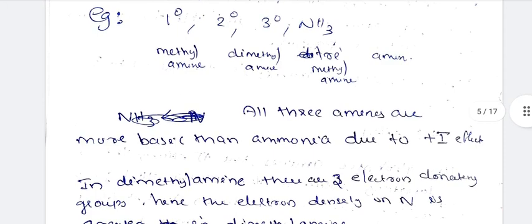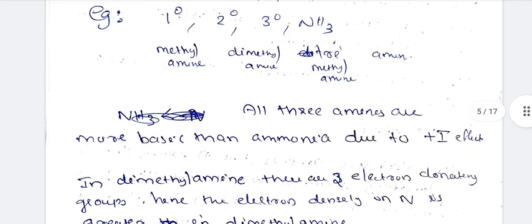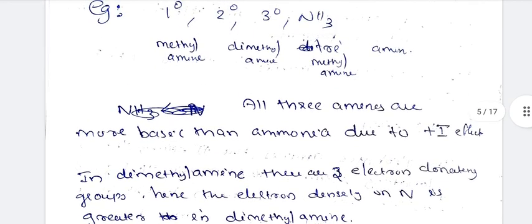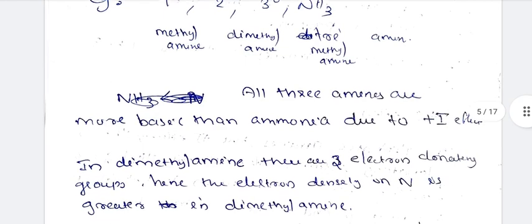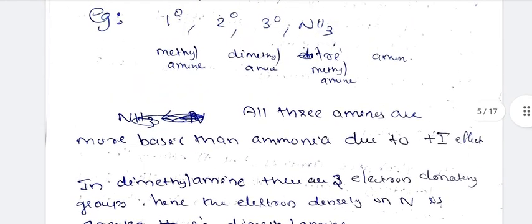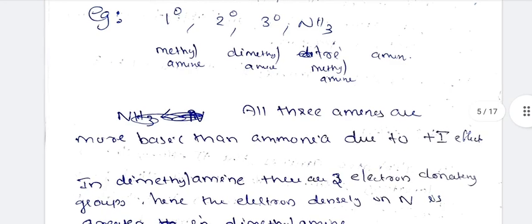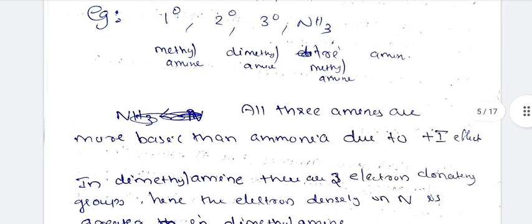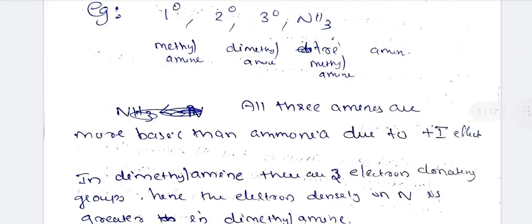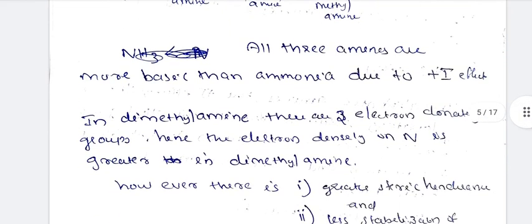Combining all factors, the basicity order based on the +I effect alone is tertiary, secondary, primary. Now discussing actual amines: methylamine, dimethylamine, trimethylamine — primary, secondary, tertiary — compared to ammonia. Methylamine is more basic than ammonia due to the +I effect.